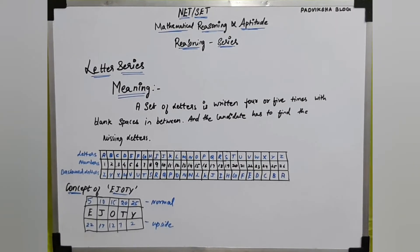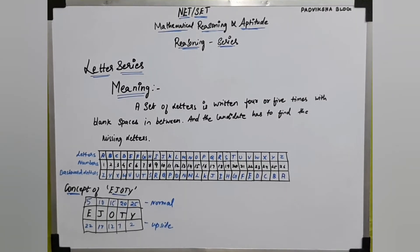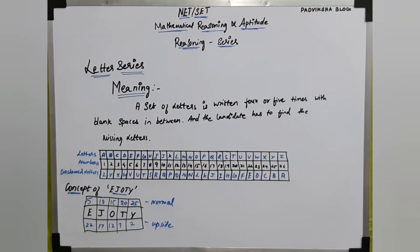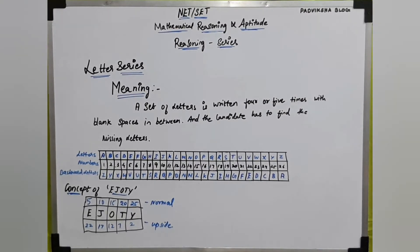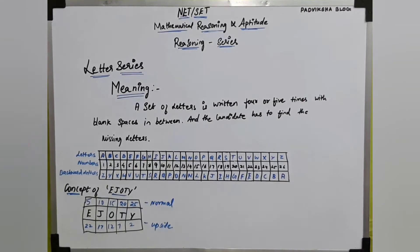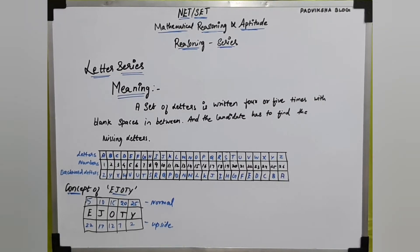In letter series, a set of letters is written four or five times with blank spaces in between. There are 26 letters and a series is formed — it may go upside down or in any direction. The letters are written with missing letters in the blank spaces, and the candidate should find those missing letters.